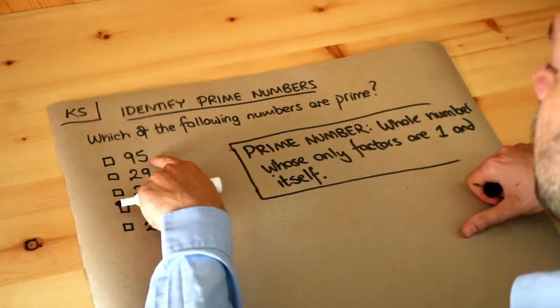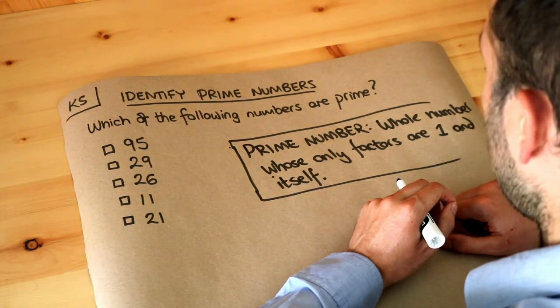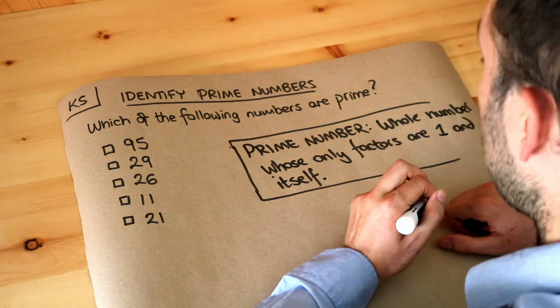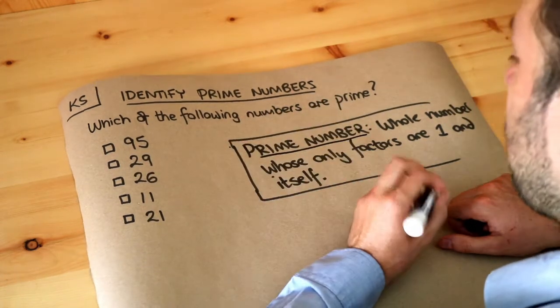We need to look at these different numbers and consider which of them has no factors other than one and itself, because then it will be a prime number.